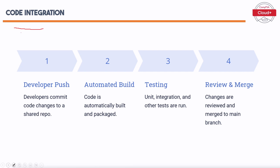Effective code integration is fundamental to a smooth CI-CD process. The steps involved are: First, Developer Push — developers commit code changes to a shared repo, facilitating collaboration. Second, Automated Build — code is automatically built and packaged, verifying it can be compiled correctly. Third, Testing — unit, integration, and other tests validate the functionality of the code. Fourth, Review and Merge — changes are reviewed and merged to the main branch, enhancing code quality.